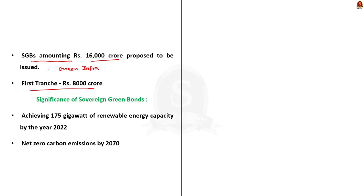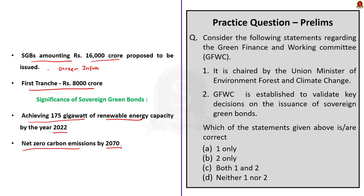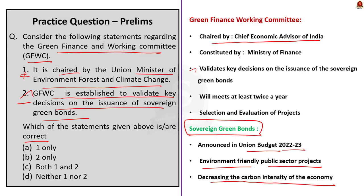₹8,000 crore has already been raised in the first tranche of sovereign green bonds. These bonds will also help achieve ambitious targets such as 175 gigawatts of renewable energy capacity by 2022 and net zero carbon emissions by 2070. The Green Finance Working Committee was constituted by the Ministry of Finance with representation from relevant line ministries. It will meet at least twice a year to support the Ministry of Finance on project selection and evaluation. The correct answer is option B — 2 only.